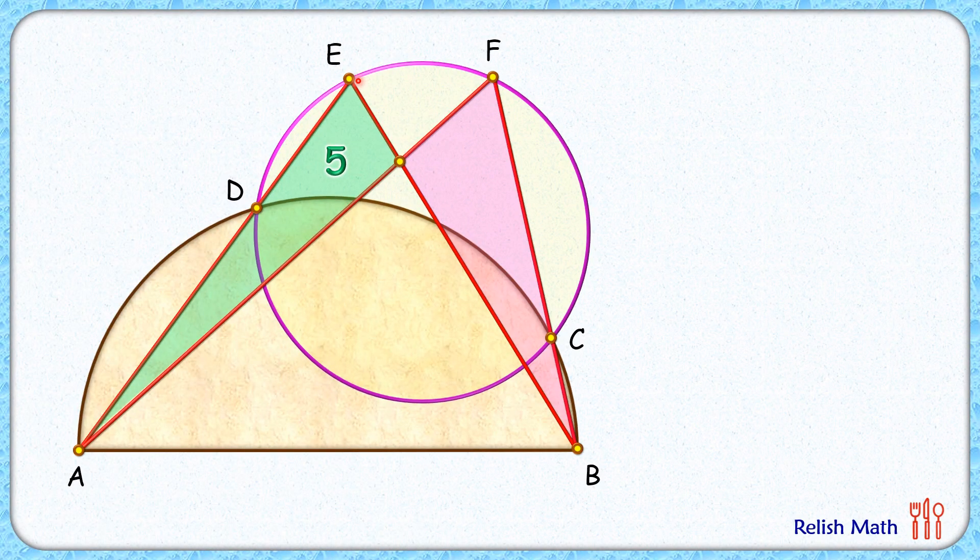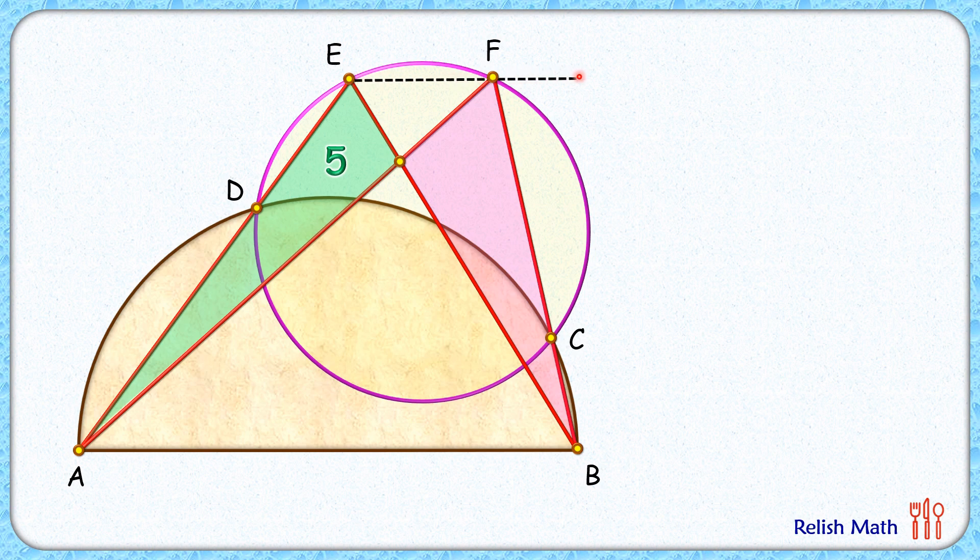Let's start by joining EF and extend it slightly, and also let's join DC. Let's assume this angle B here is alpha degree.